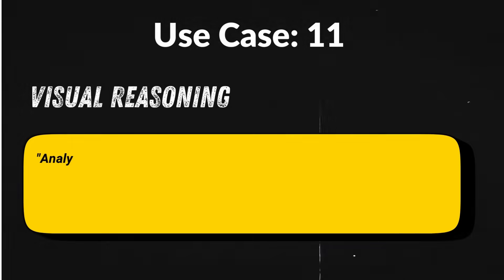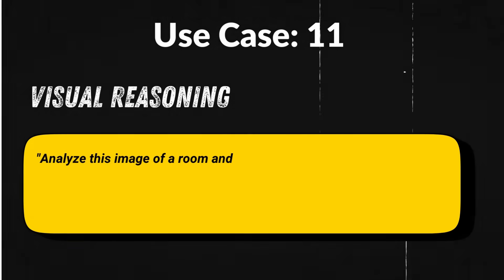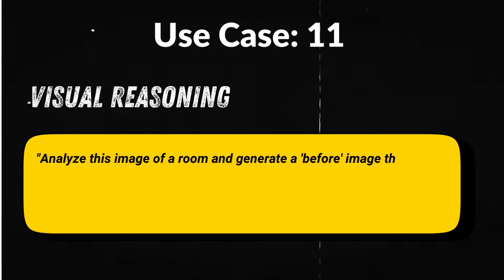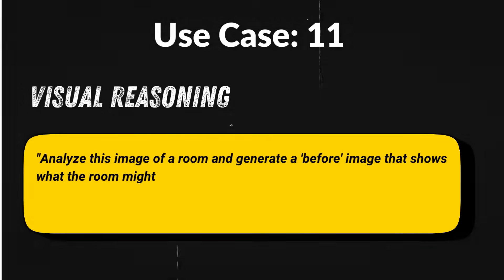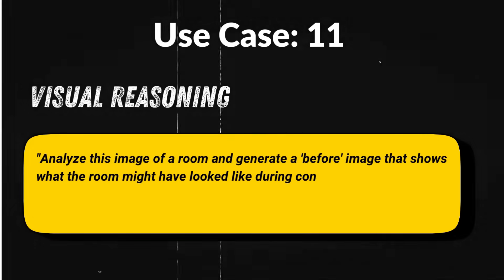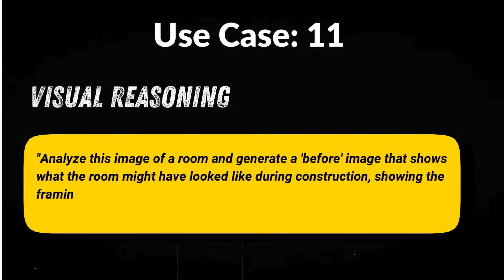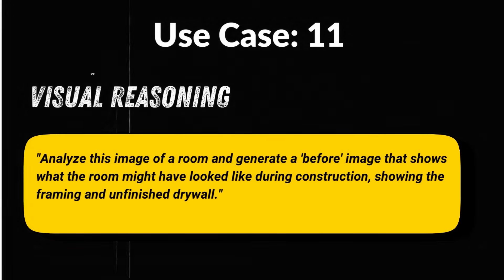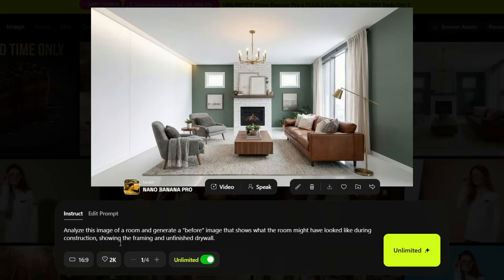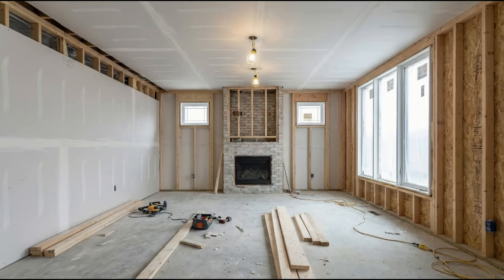Use case 11: Visual reasoning — before/construction room inference. Nano Banana Pro doesn't just generate images; it actually infers hidden context from what it sees. Prompt: 'Analyze this image of a room and generate a before image that shows what the room might have looked like during construction, showing the framing and unfinished drywall.' It reconstructs the entire construction phase — exposed wooden framing, raw wiring, and unfinished walls — all logically inferred from a finished room.